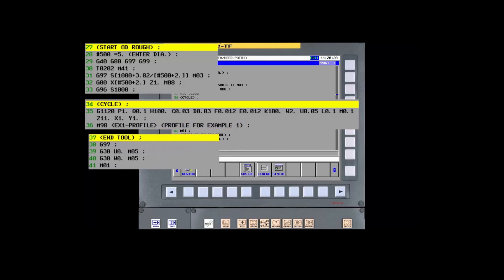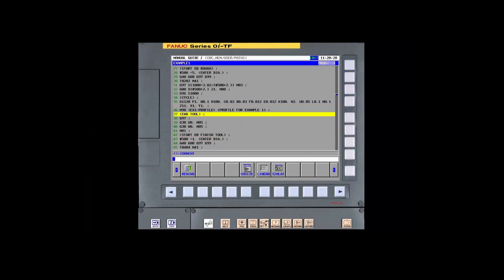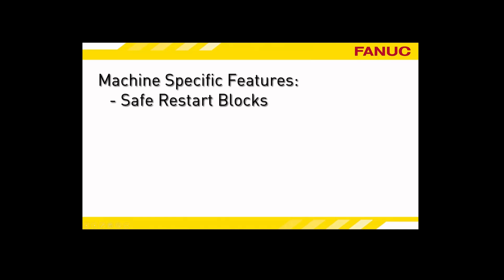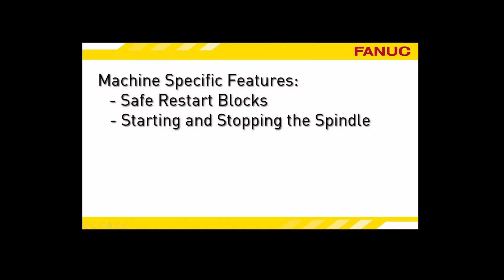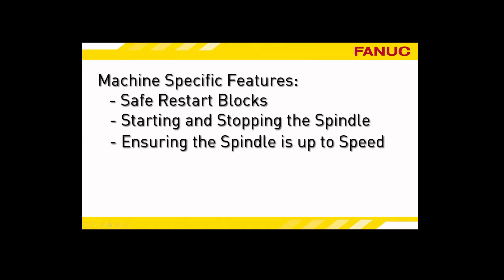The machining cycles provided with Manual Guide I are responsible for creating coordinated motion to machine the geometry selected by the programmer. However, they do not control machine-specific features such as safe restart blocks, starting and stopping the spindle, making sure the spindle is up to speed before machining begins, and turning the coolant on and off.